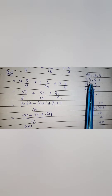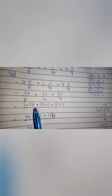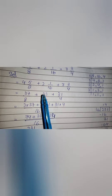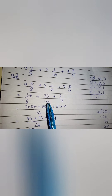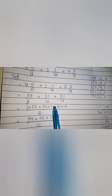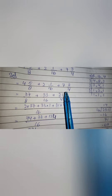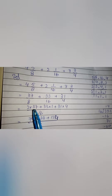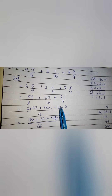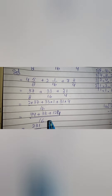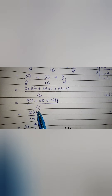Samajh aa gaya aap logon ko? Ab is ka H part hai: four whole five upon eight plus two whole one upon sixteen plus seven whole three upon four. To is ka bhi pehle hum whole ko khatam karenge. Eight × 4 = 32, plus 5 = 37 upon eight. Plus: sixteen × 2 = 32, plus 1 = 33 upon sixteen. Aur: four × 7 = 28, plus 3 = 31 upon four.